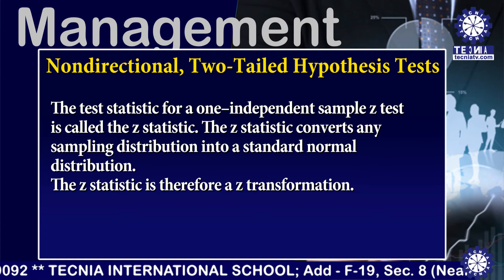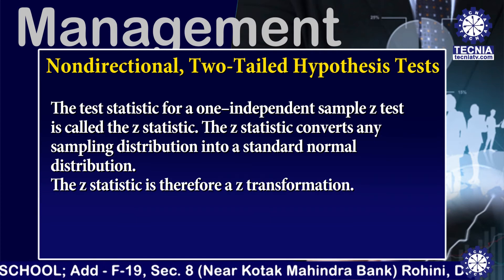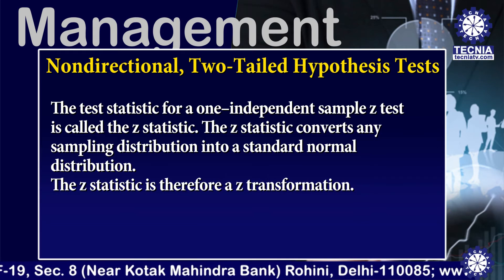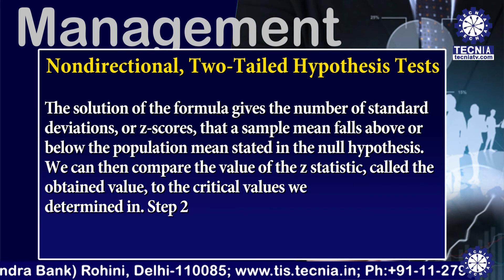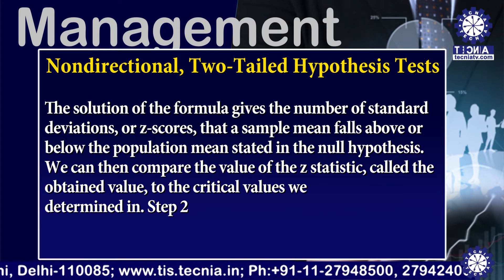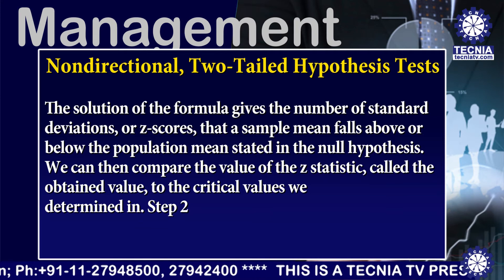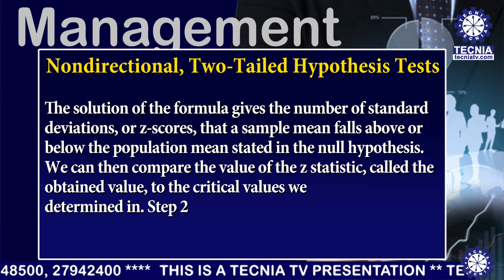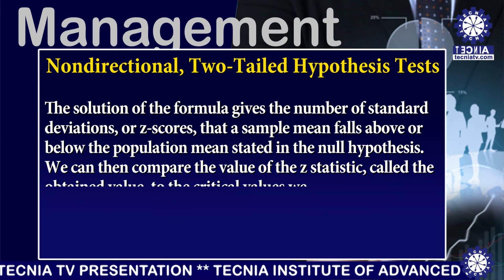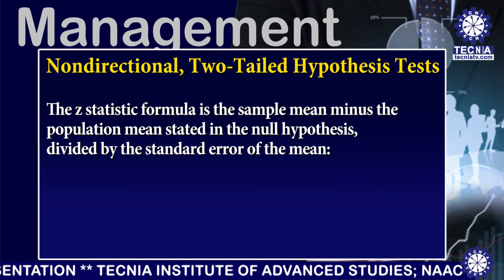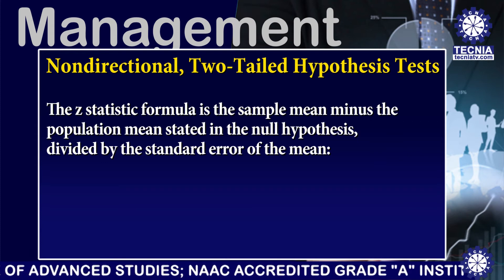The test statistic for a one independent sample Z test is called the Z statistic. The Z statistic converts any sampling distribution into a standard normal distribution — it is therefore a Z transformation. The solution of the formula gives the number of standard deviations, or Z scores, that a sample mean falls above or below the population mean stated in the null hypothesis. We then compare the obtained value to the critical values determined in Step 2. The Z statistic formula is: the sample mean minus the population mean stated in the null hypothesis, divided by the standard error of the mean.